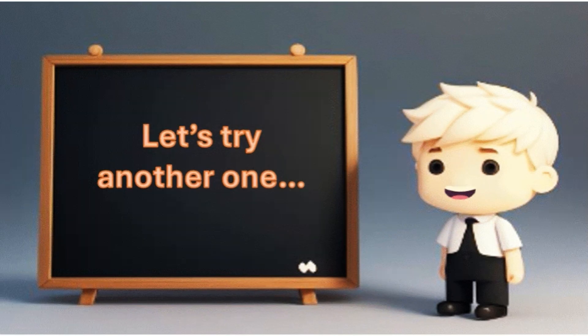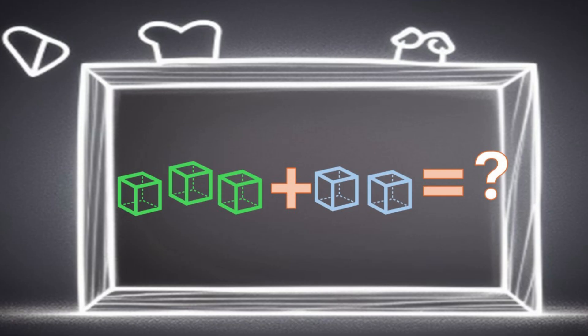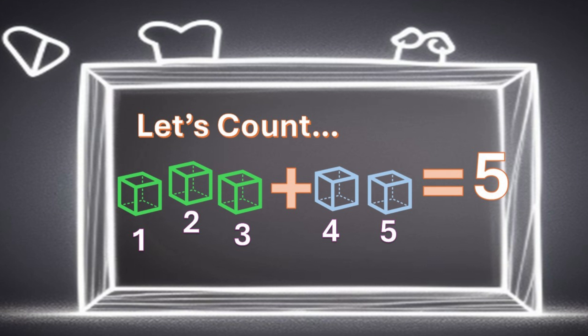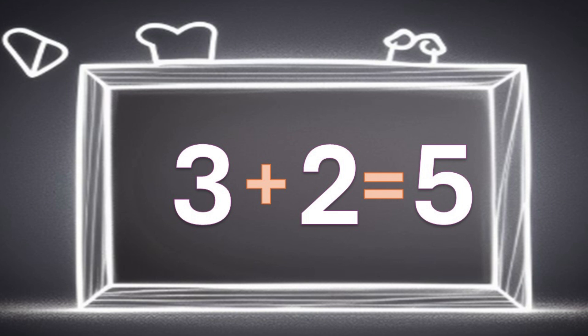Awesome, now let's try another one. If you have three blocks and I give you two more blocks, how many blocks do you have? Let's count. One, two, three, four, five, five blocks. That's right, five blocks. We added three blocks and two blocks together to make five blocks. Let's say it together. Three plus two equals five.